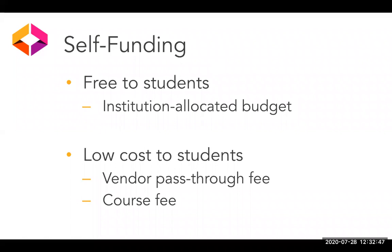Under low cost to students, we have a couple of possibilities, and there may be additional ones not included in this presentation. A vendor pass-through fee is a payment made directly to an OER courseware provider, or it could be a payment made through the bookstore. An example of this would be Lumen Learning's Waymaker platform, which you can potentially charge students through the bookstore as if it were a textbook — something under $40. While the course materials may technically still comply with the five R's of open, this would not be an option if you've marketed OER as zero course materials cost. For that reason, this model might work best for affordable course materials initiatives.